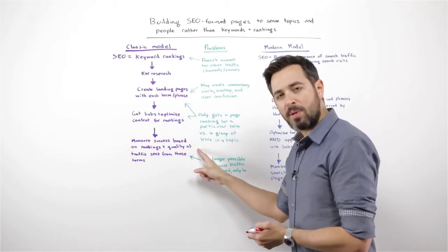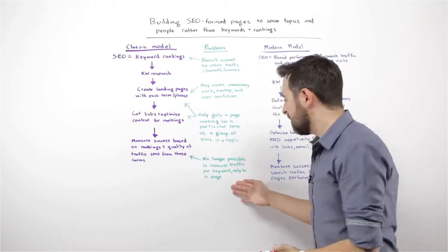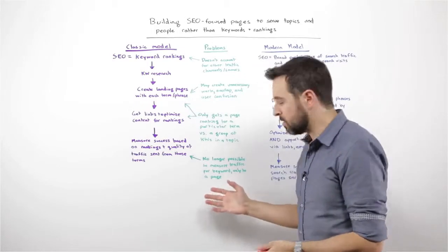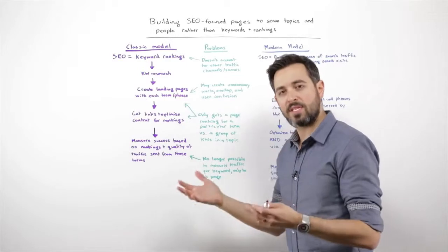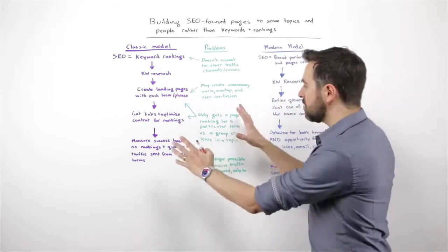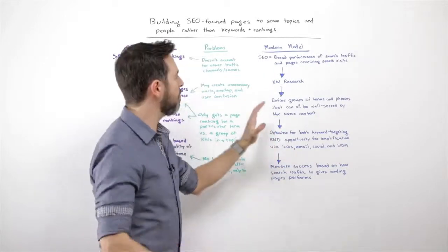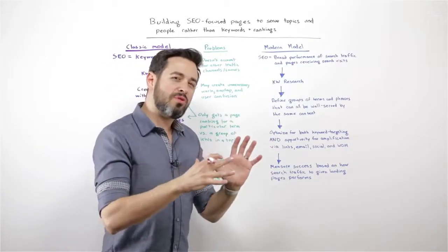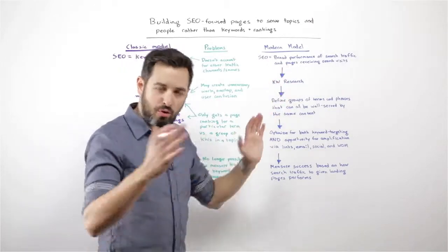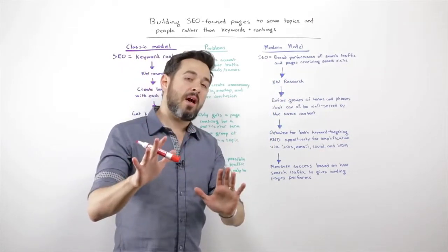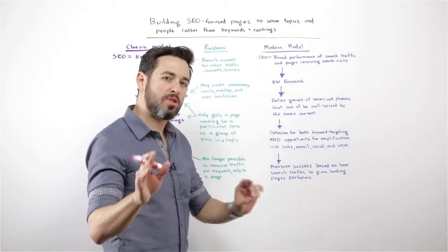Then if you're measuring success based on the traffic that the keyword is sending, this isn't even possible anymore because Google has taken away keyword referral data and given us 'not provided' instead. And this is why we're seeing this big shift to this new, more modern model, where SEO is really about the broad performance of search traffic across a website, and about the broad performance of the pages receiving search visits.